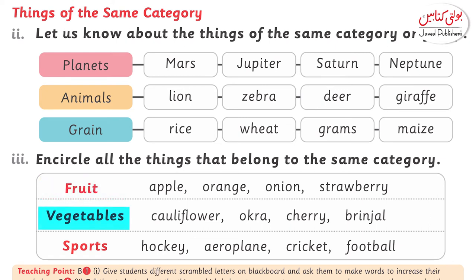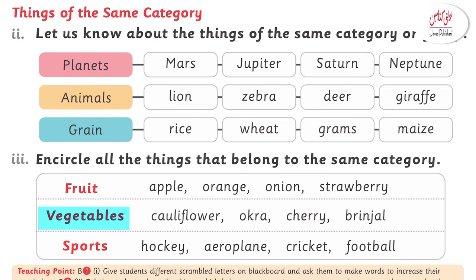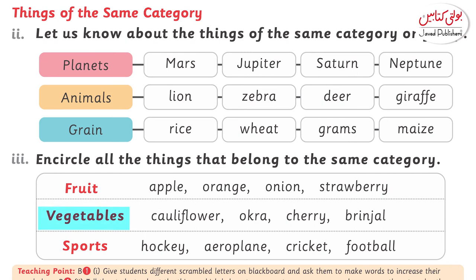Next, you have to find out vegetables. In the sports column, you also have to identify vegetables. One important thing — a word in the column is okra. We call okra ladyfinger. Okra is ladyfinger.